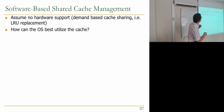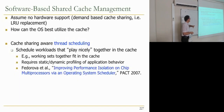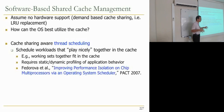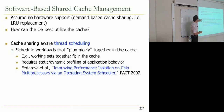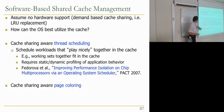Two software approaches: first, cache-sharing-aware thread scheduling — schedule workloads that play nicely together in the cache. If an application is streaming, don't pair it with an application that has very good locality. Or estimate working set size and schedule applications that fit together in the cache. This requires profiling and a good mix of applications to choose from. Second, page coloring — a more general approach that partitions the cache regardless of what applications are in the system.